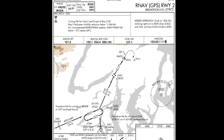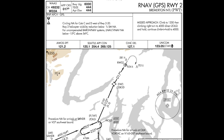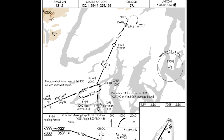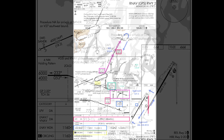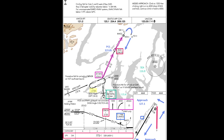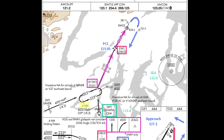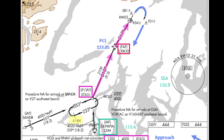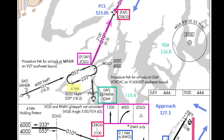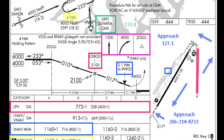Conventional instrument charts are cluttered. They must show all arrival routes, all lines of minimums, and other details that may not be relevant for your aircraft and the path you will fly to join a procedure. I have long advocated annotating charts. The process helps me note information during preflight planning, and it emphasizes important details to review when I set up, brief, and confirm a procedure in the airplane.